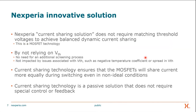The NXPeria current sharing solution doesn't rely on threshold voltage anymore. We don't require matching threshold voltages to achieve balanced dynamic current sharing. This is a MOSFET technology — we're not adding an extra screening step. This is a MOSFET purposely built to share current with other MOSFETs, and it does this by not relying on threshold voltage. So we don't need the additional screening process, and it's not impacted by the negative temperature coefficient or the spread in threshold voltage. The current sharing technology ensures more equal current sharing during switching even in non-ideal conditions, and it's a passive solution — it doesn't require any special control or feedback. From a design perspective it's still a three-terminal device.